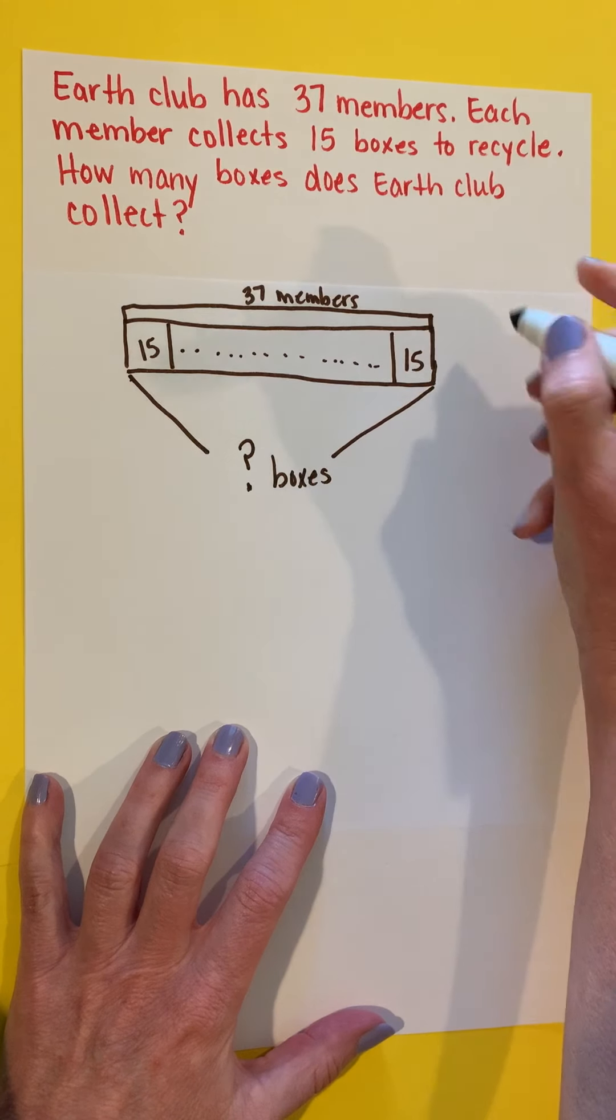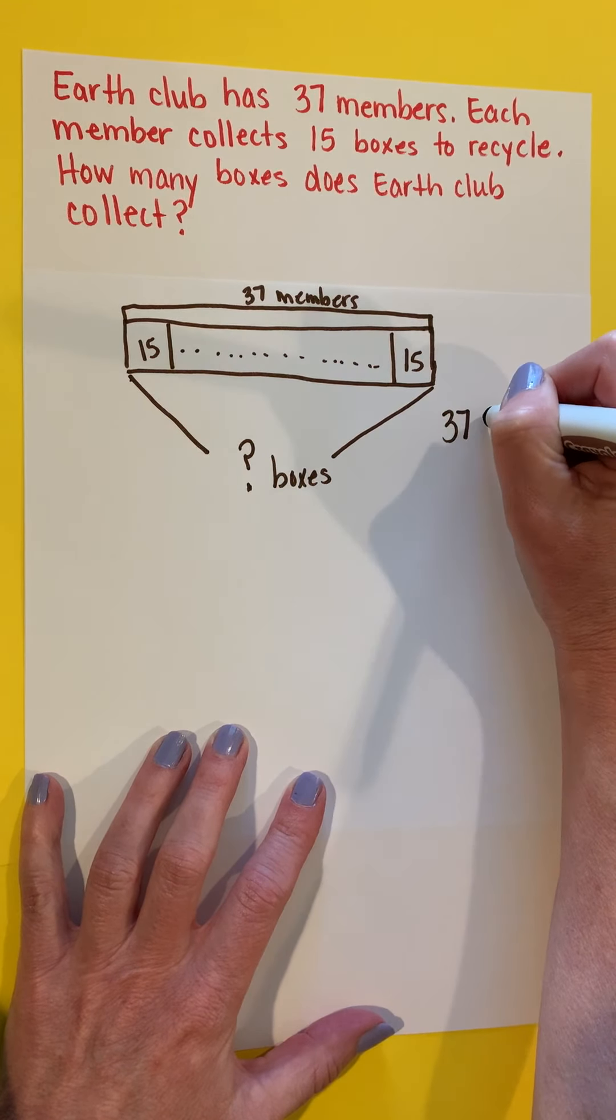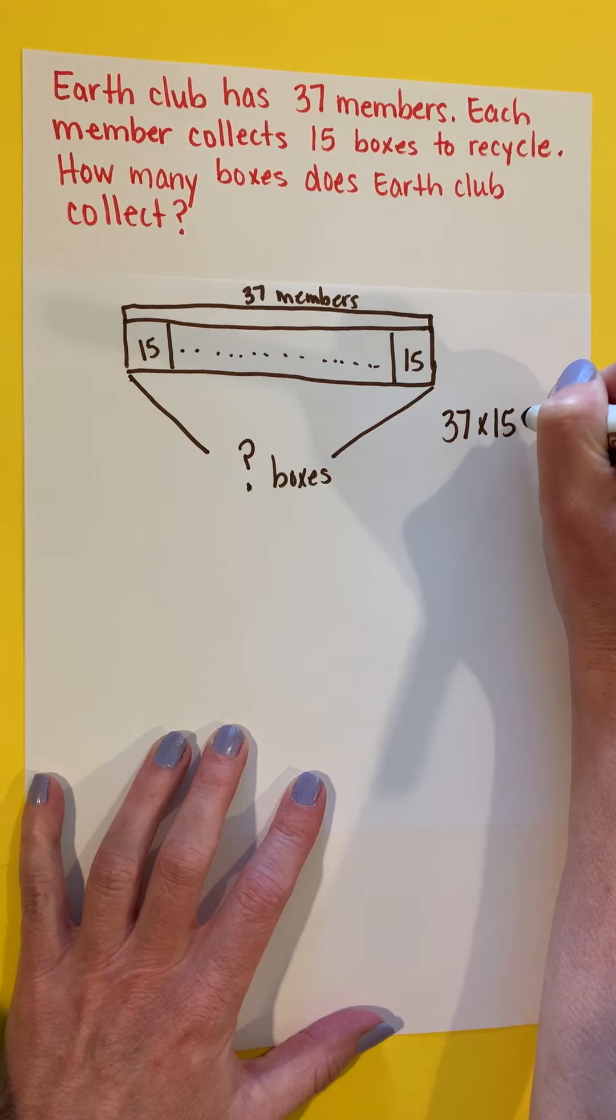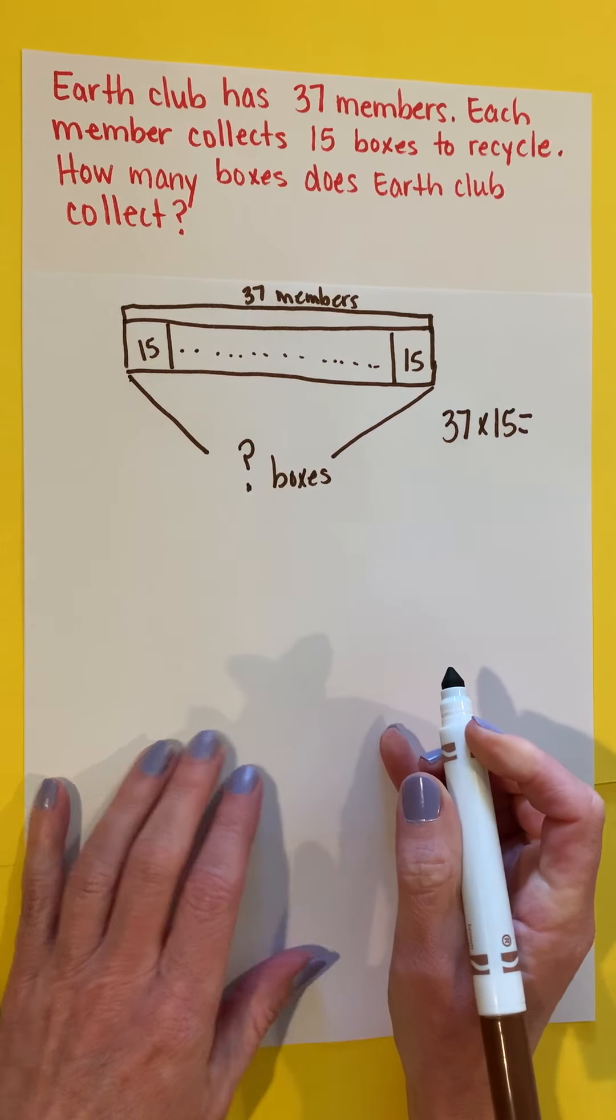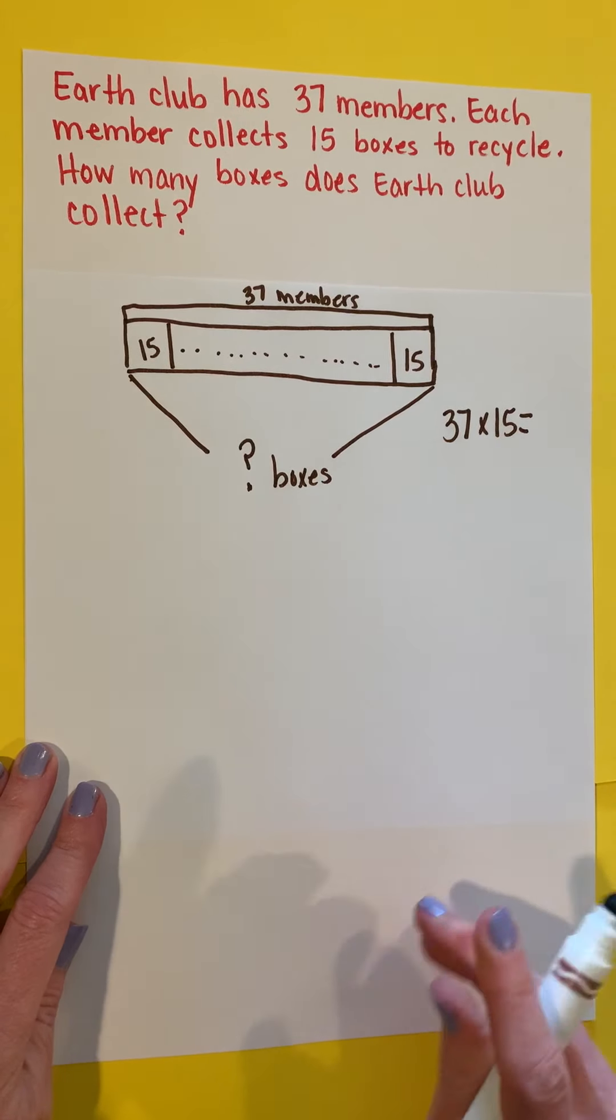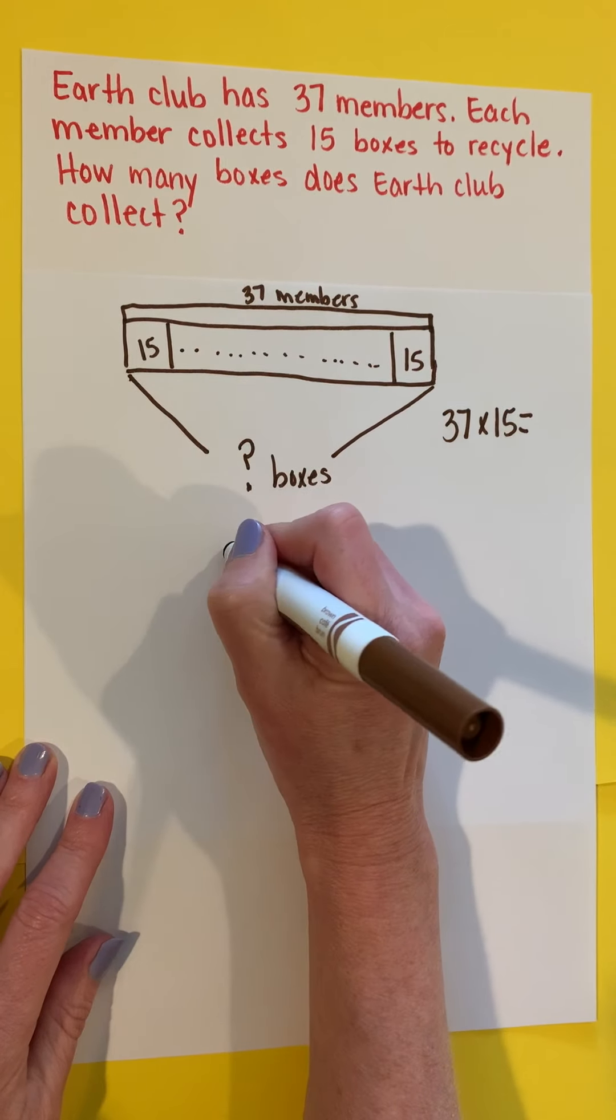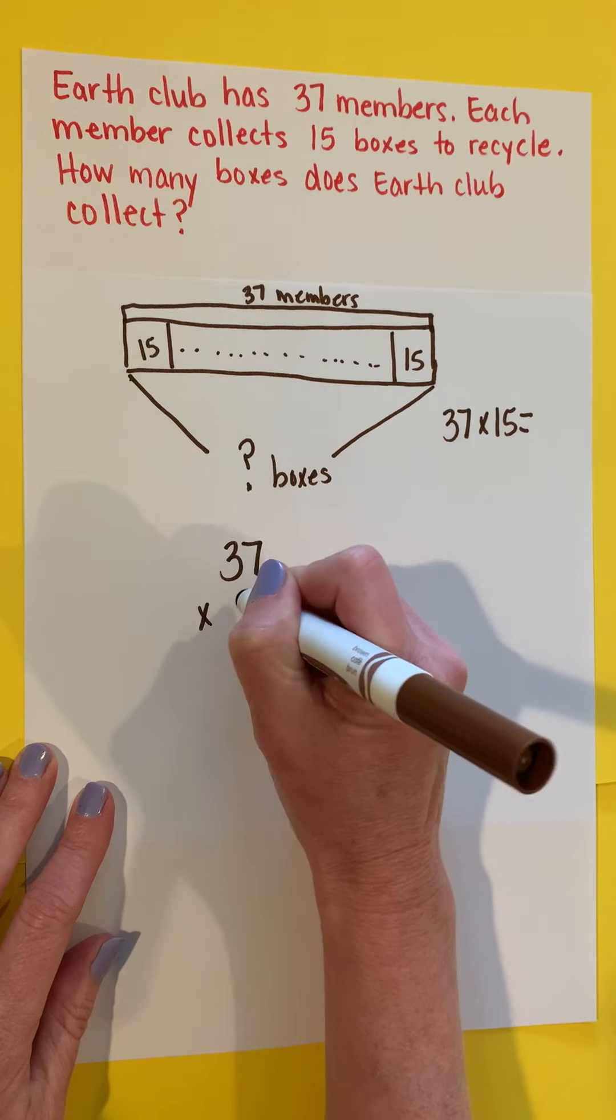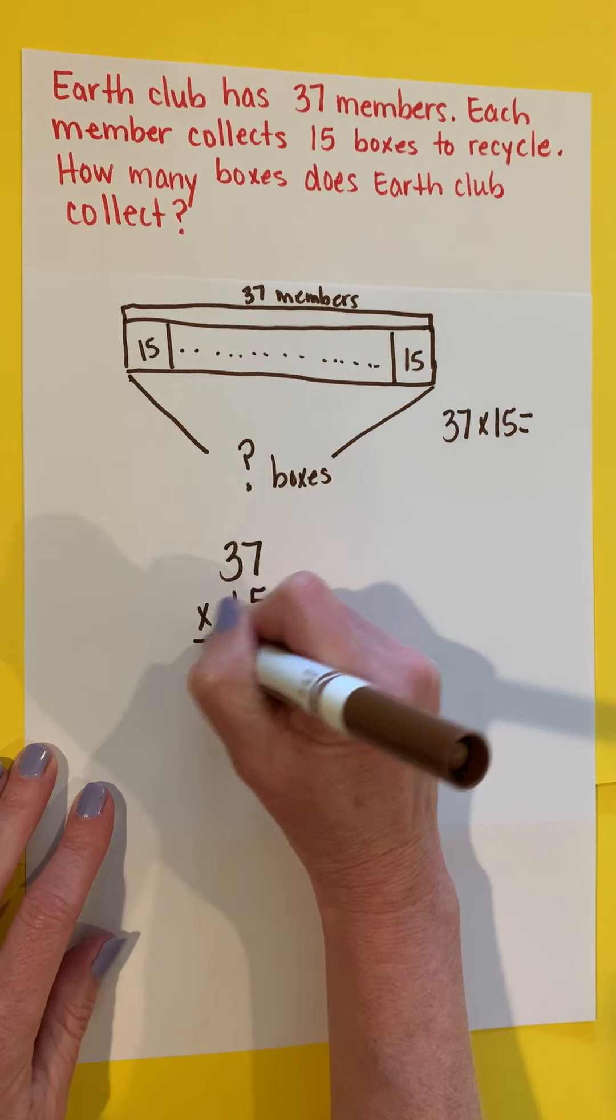So I look at this, and I notice that my problem should be 37 multiplied 15 times. Well, we're going to do this using the partial product strategy. So I'm going to set up my problem like this.